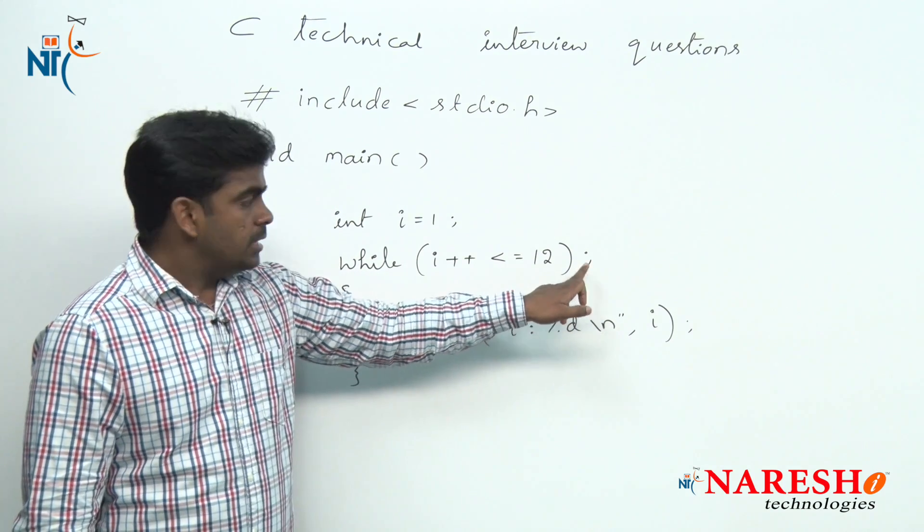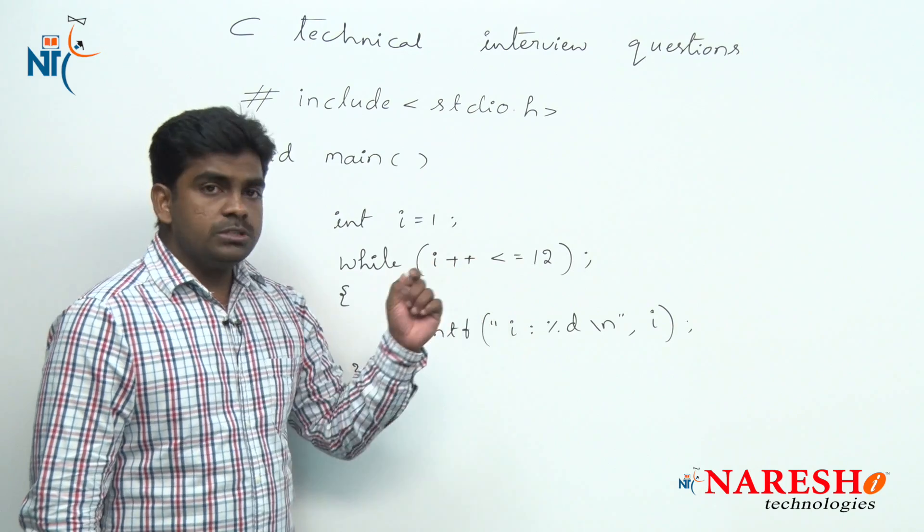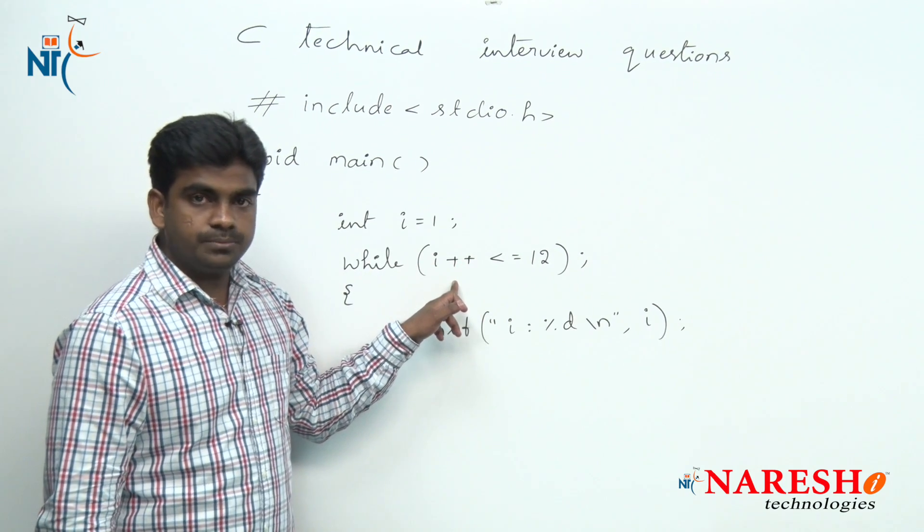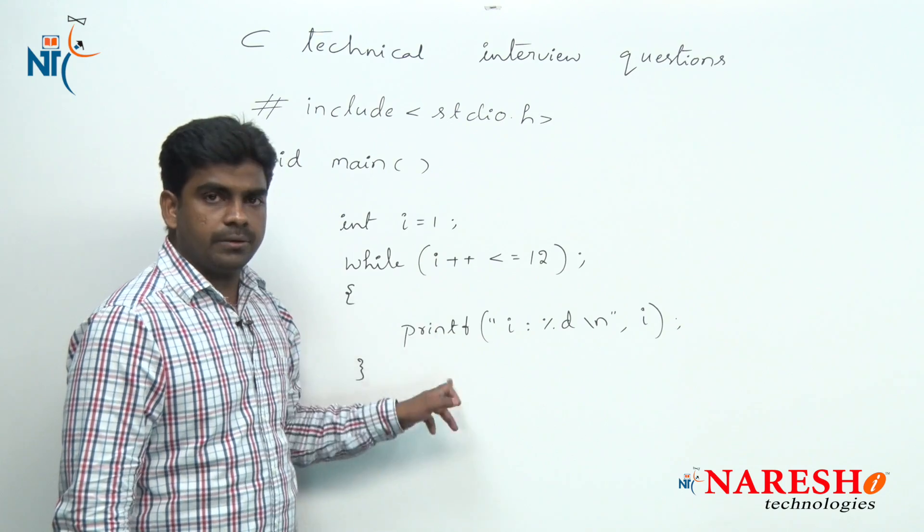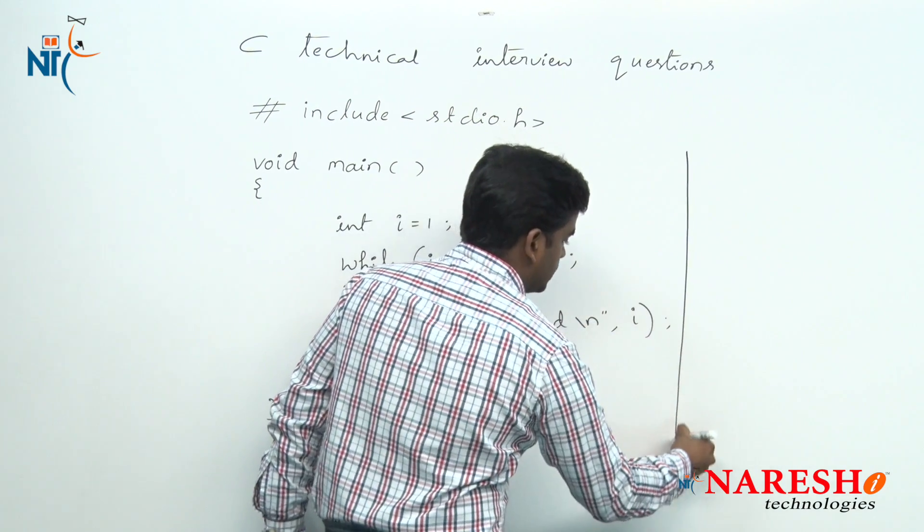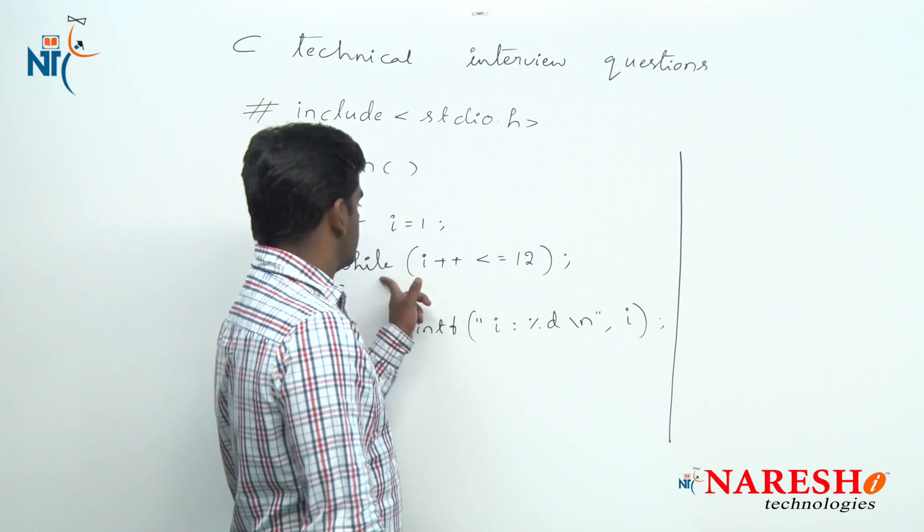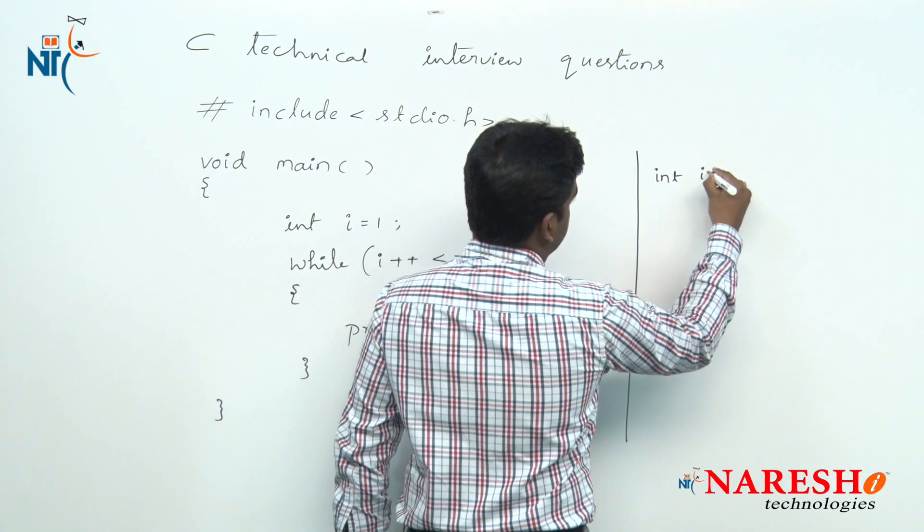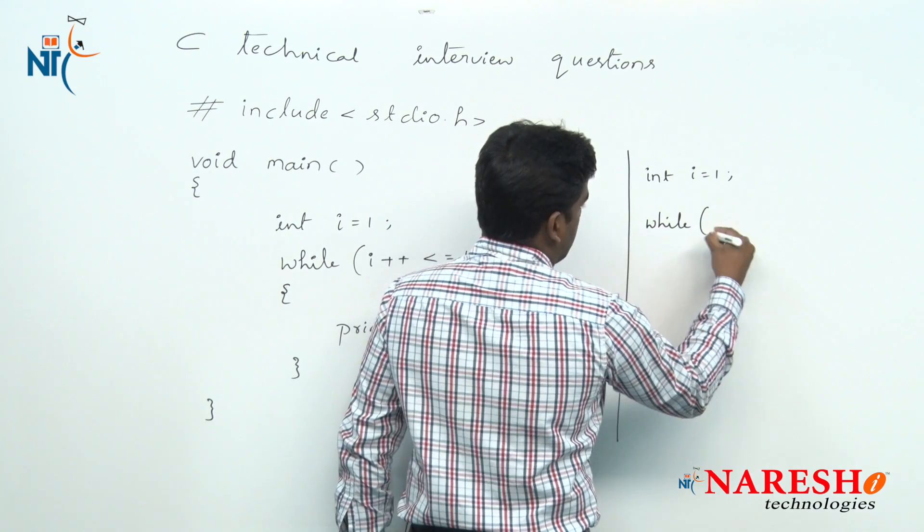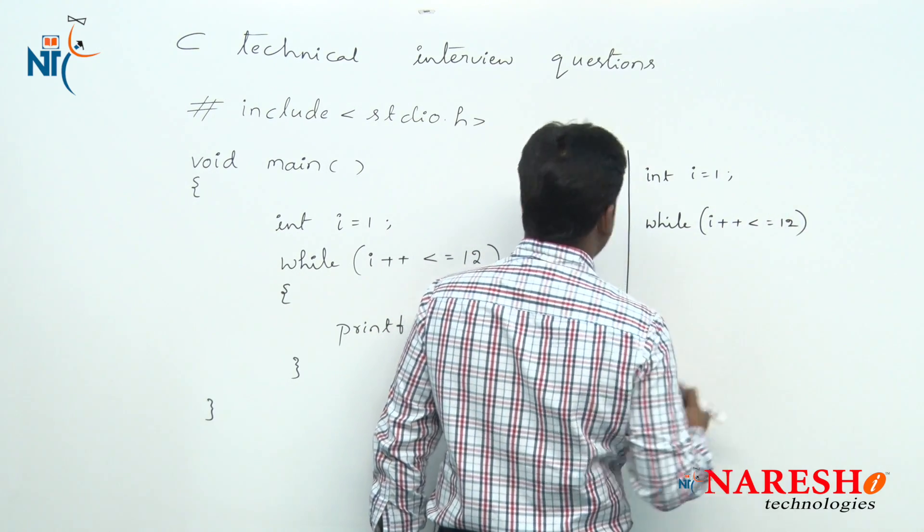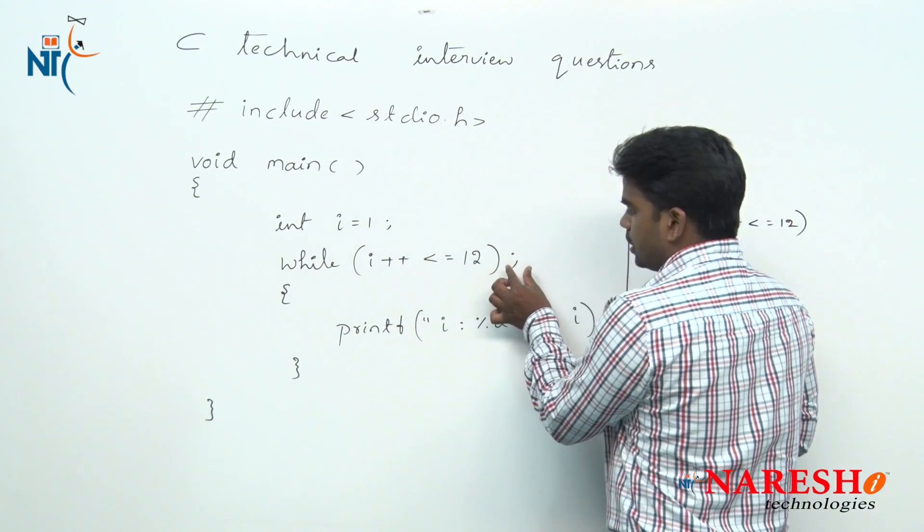What is this meaning? This while loop executes with empty block as long as the condition is true. It means we are rewriting this one like this internally. Internally this code will be written like this: int i equals to 1, while i plus plus is less than or equals to 12, here it is a semicolon.